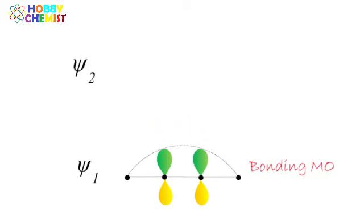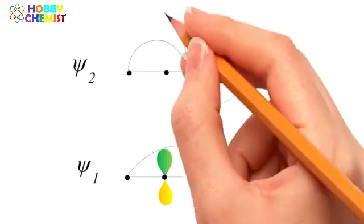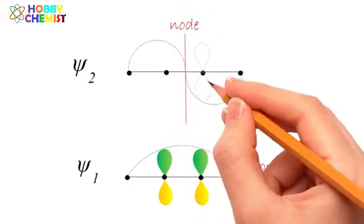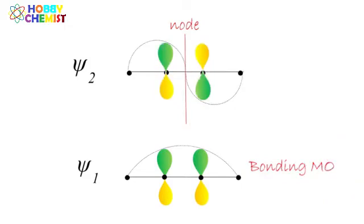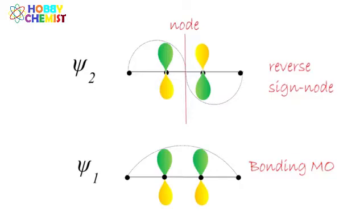To construct anti-bonding molecular orbitals of ethylene, make a waveform with single node. When the amplitude is negative, it is indicated by the reversal of the color of the lobe. This can also be represented by plus or minus sign.